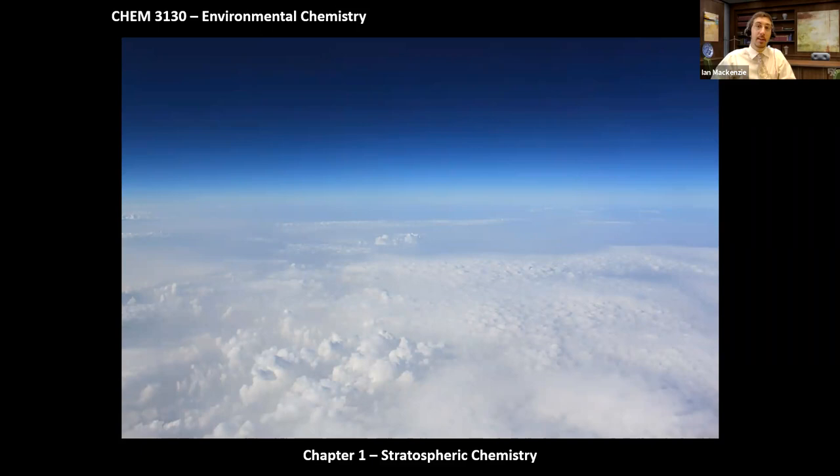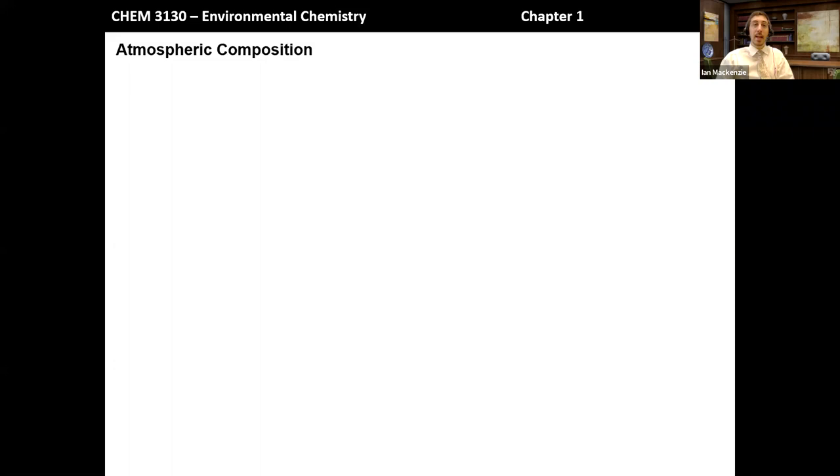So we start this course by talking about atmospheric chemistry and the chemical reactions and processes that occur in the troposphere and the stratosphere. For chapters one and two, we'll focus primarily on stratospheric chemistry and talk about ozone particularly. And then in chapters three and four, we'll move more into tropospheric chemistry. Before we even discuss those reactions, we really need to talk about the composition of the atmosphere itself and what we mean when we talk about the stratosphere or the troposphere. What are those? Those aren't maybe familiar terms to us on an everyday basis.